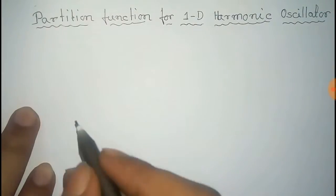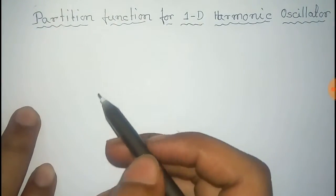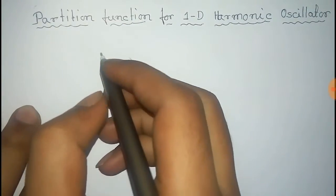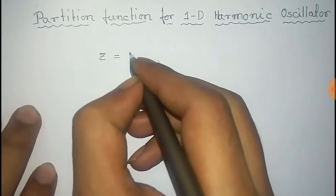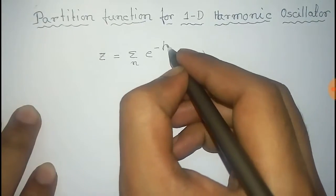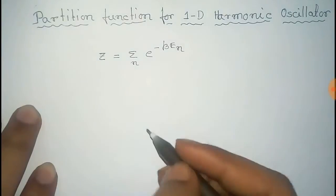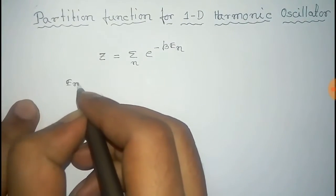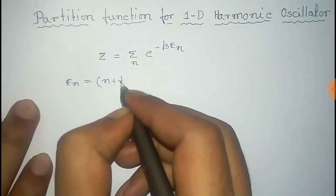In this video we will find the expression of the partition function for the 1D harmonic oscillator. The general expression of the partition function is given by Z equal to sum over n of e to the power minus beta times E_n, where beta is equal to 1 over kT. For the 1D harmonic oscillator, E_n is equal to n plus one-half times h-bar omega.